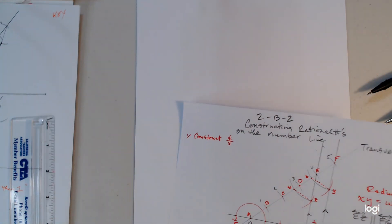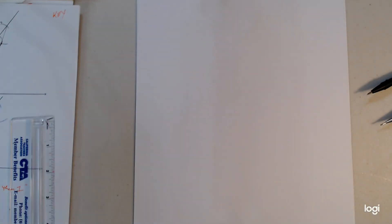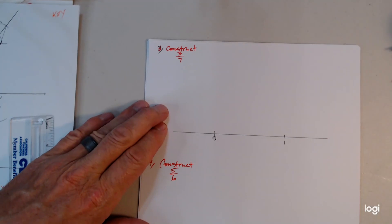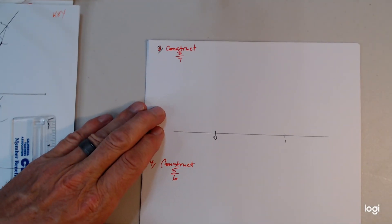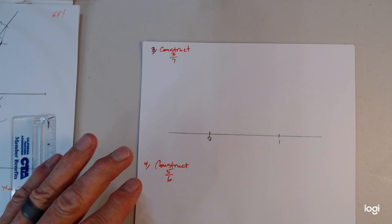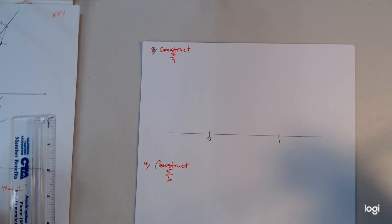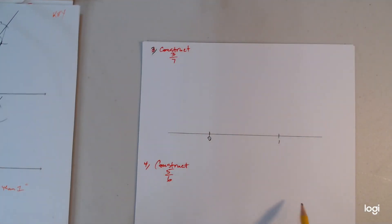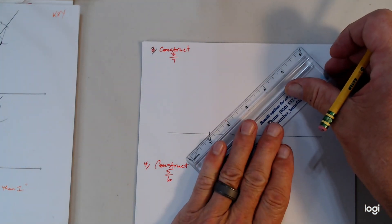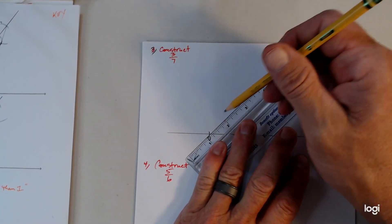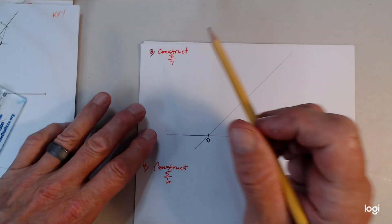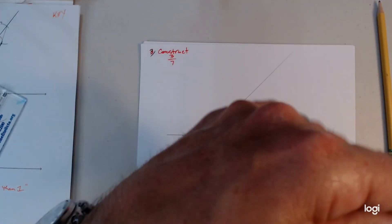Let's try a few more just for funsies. Let's try three-sevenths. As the denominator grows, obviously you have more steps involved. Just like the last ones, you want to construct a transversal at around 40 degrees — make it long. Our denominator's seven, so we've got to construct seven arcs.